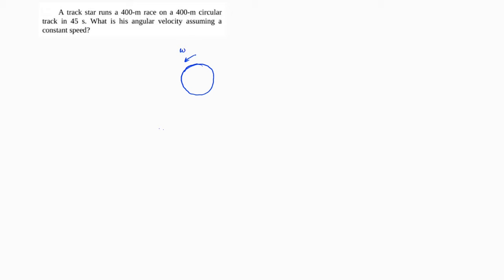The first problem: a track star runs a 400-meter race on a 400-meter circular track in 45 seconds. What is his angular velocity assuming a constant speed? If the velocity is constant, then angular velocity would also be constant.